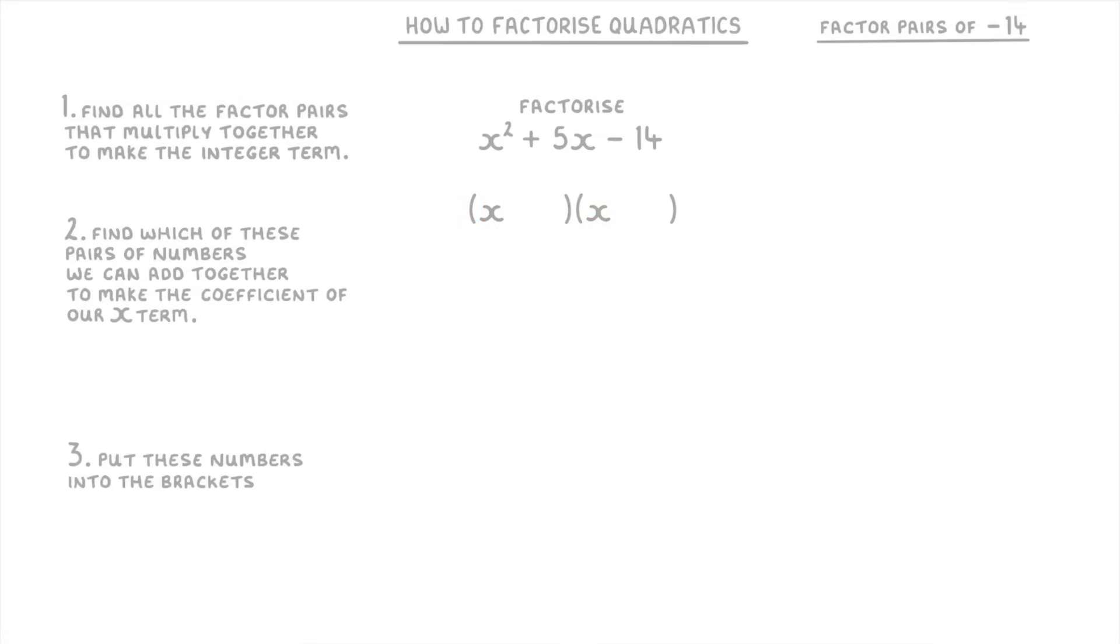Next we want to write out all the factor pairs of negative 14. And because negative 14 is a negative number, one of the factors in each pair has to be negative as well. Meaning we could have positive 1 and negative 14, or negative 1 and positive 14, then positive 2 and negative 7, or negative 2 and positive 7.